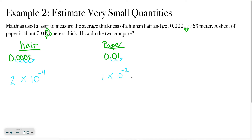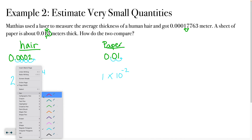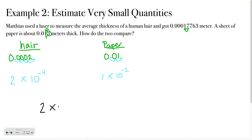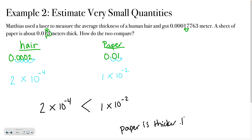So I have 2 times 10 to the negative 4th, and 1 times 10 to the negative 2nd. Which one is bigger? Remember, when working with negatives, the smaller the exponent digit itself, the bigger the number. So we know that paper is thicker than hair. Another way to say it: hair is thinner than paper.